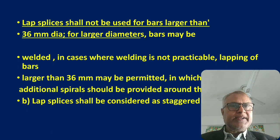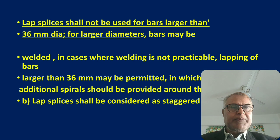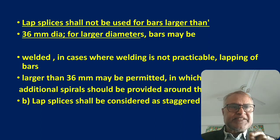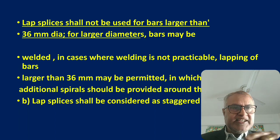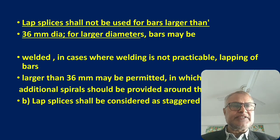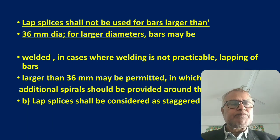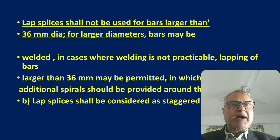Lap splices for bars of 36 mm diameter and larger are not allowed. For such bars, welding must be done. If welding is not practical at the site, you may provide lap splices but must wrap the lap zone with spiral ties using 8 mm or 6 mm wire, extended about 8 to 10 inches on both sides. However, in most cases, welding is required for bars of 36 mm and larger.